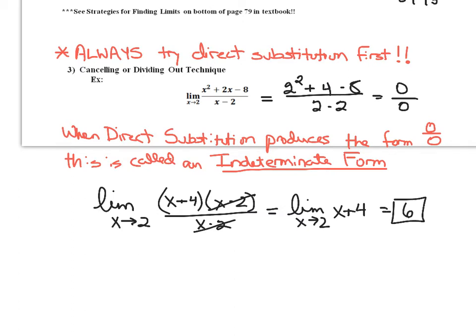This gives me the limit as x approaches 2 of x plus 4, which gives an answer of 6. What this means is that I've rewritten this function. The function x squared plus 2x minus 8 over x minus 2 doesn't have an answer at x equals 2, but I can rewrite it in an equivalent form. The only place these two functions are not equivalent is at the number 2. My newly written function — x plus 4, a linear function — does have an answer and allows me to find the limit of the original.